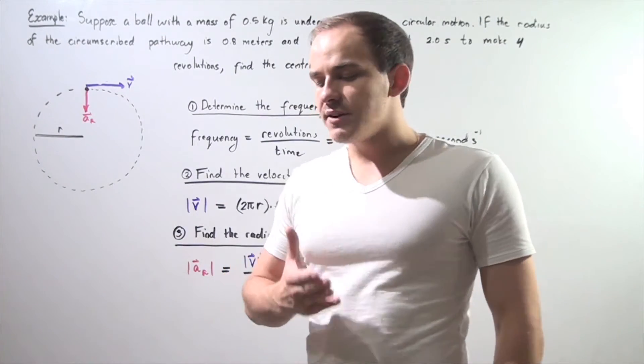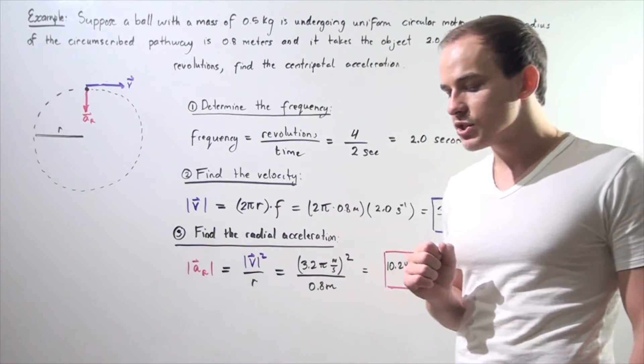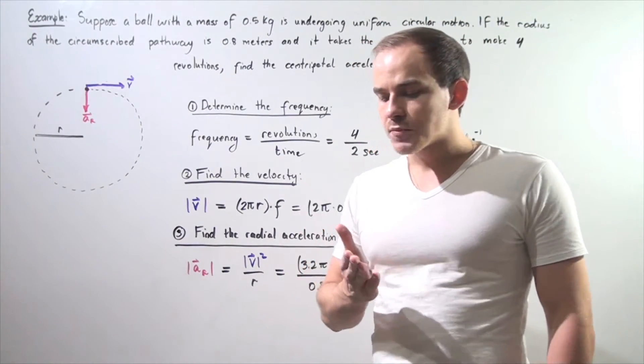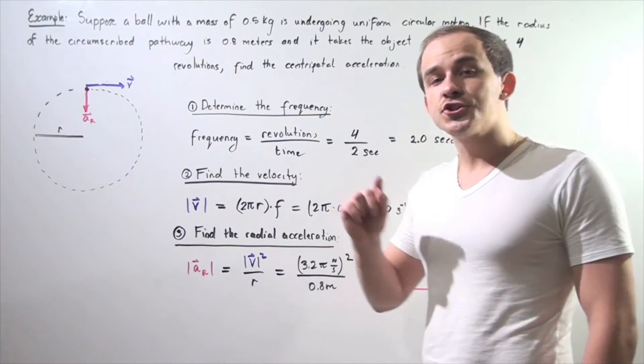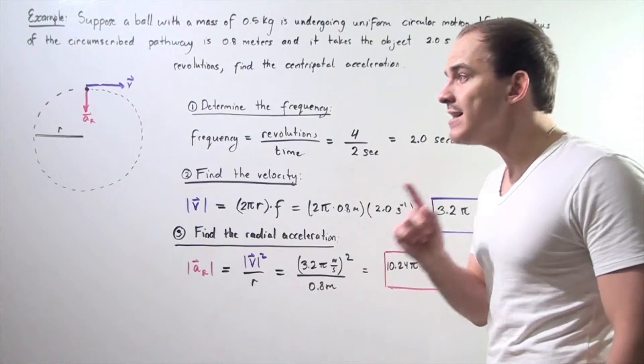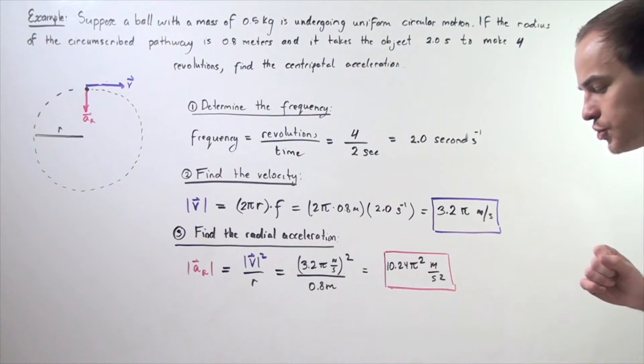Let's suppose that we have a ball with a mass of 0.5 kilograms that is undergoing uniform circular motion. If the radius of the circumscribed pathway is 0.8 meters and it takes the ball two seconds to make four revolutions,